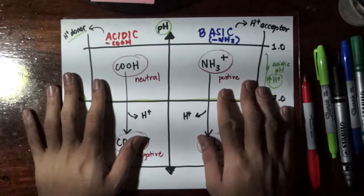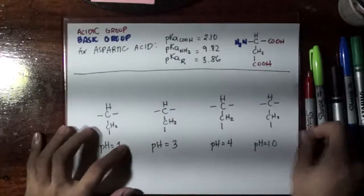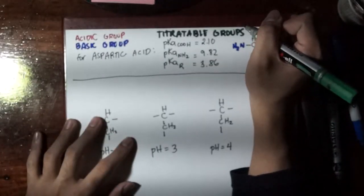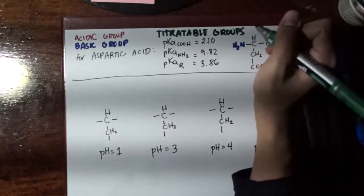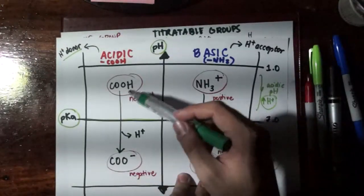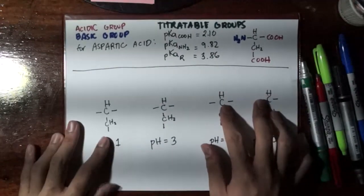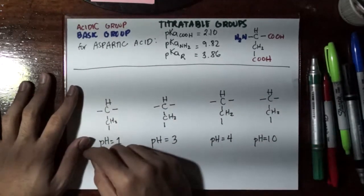With that said, this clarifies the next topic: titratable groups. Coming from the word titratable, these are functional groups that react to titration — meaning if I add an acid or add a base, they adjust pH. Titratable groups will give charge depending on how you adjust the pH. I'll explain this in more detail using an example amino acid: aspartic acid.